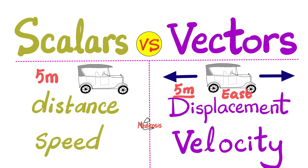This quantity has a magnitude and direction, making this a vector. When I say 5 meters and stop, that's a distance. But when I say 5 meters east, this is a displacement. Distance is a scalar because it has a magnitude but no direction. Displacement, however, has a magnitude and a direction, so displacement is a vector.